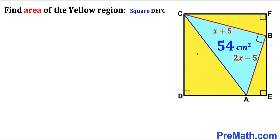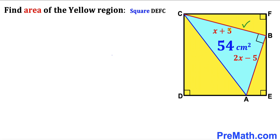Welcome to PreMath. In this video we have a blue right triangle ABC fully confined in a square DEFC. The area of this blue triangle ABC is 54 cm² and its side length AB is represented by 2x minus 5. The other side length BC is represented by x plus 5. Our task is to calculate the area of the yellow shaded region.